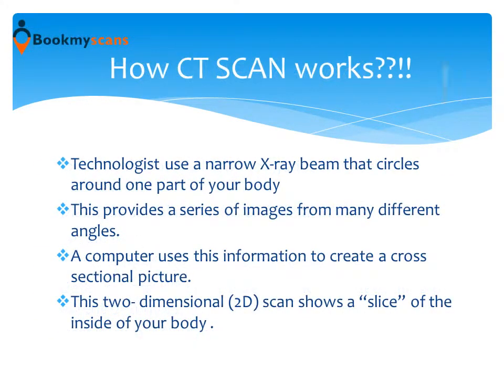How does a CT scan work? Technologists use a narrow x-ray beam that circles around one part of your body. This provides a series of images from many different angles. A computer uses this information to create a cross-sectional picture — a two-dimensional scan that shows a slice of the inside of your body.